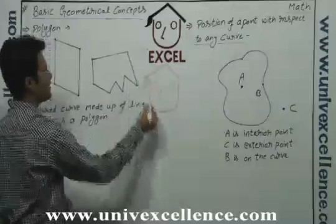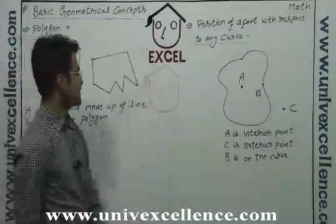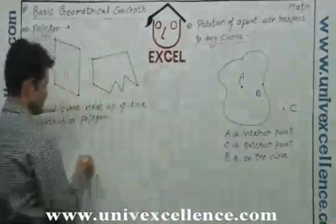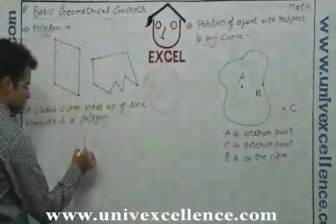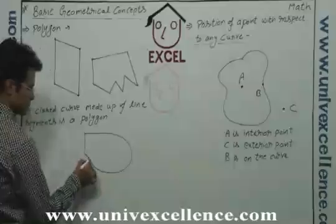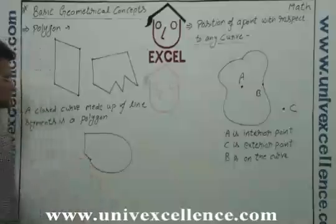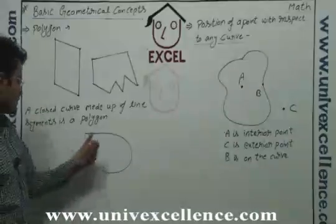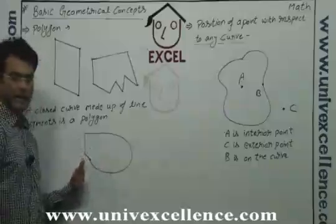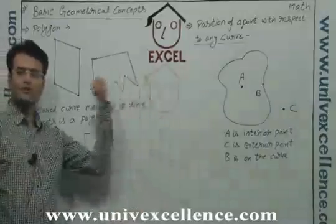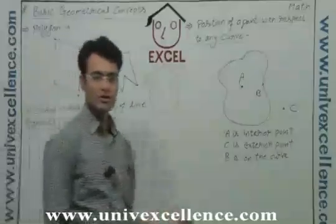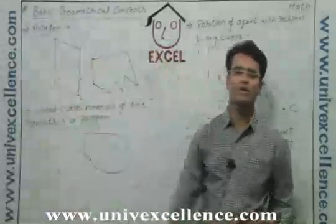It's a polygon because there are some specific line segments. This other shape is not a polygon because here we have one line segment, a second line segment, but then it's curved. So it is not a polygon. But this one is a polygon.